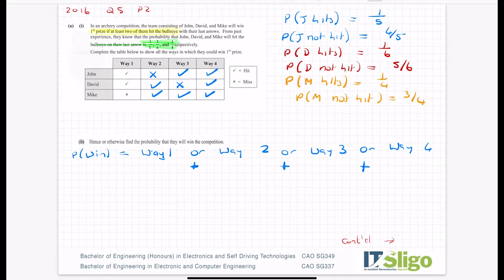So way one. We have John hitting, David hitting, Mike not hitting. So we need - and we're going to use the AND law of probability in all the different ways - John to hit and David to hit and Mike not to hit, which means that we multiply those probabilities. So it's a fifth by a sixth by three-quarters.